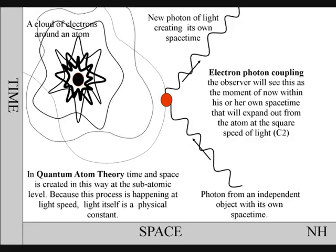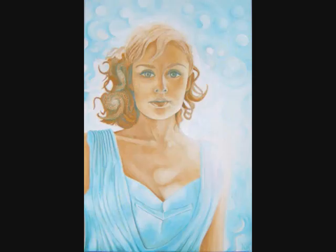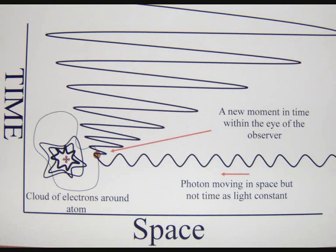Time is being created continuously by electron-photon couplings. When a quantum wave particle of light makes contact with an electron on the surface of an atom, there is a photon-electron coupling. The wave particle function collapses into a new particle of light, creating a new moment in time. There is a quantum leap of energy, and two-dimensional space on the surface of that atom will expand into three-dimensional space-time, as a new expanding wave particle function of future possibilities of light.